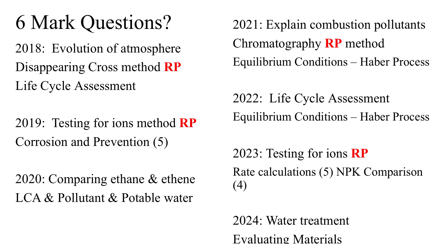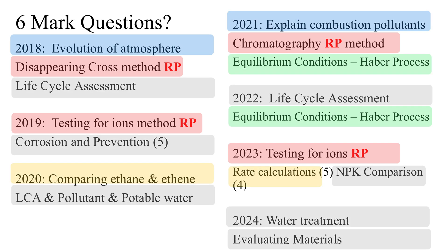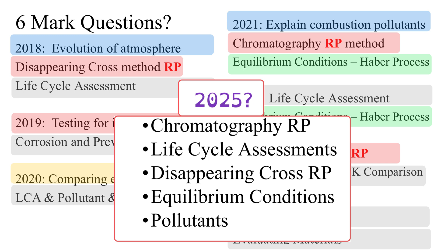There are usually two six-mark questions on chemistry paper two. Looking at what these have been from 2018 through to 2024, there's normally a required practical question and at least one more — such as life cycle assessments, corrosion and prevention, or water treatment. For 2025: chromatography as a required practical hasn't been a six-mark question for three years; life cycle assessments haven't been assessed for two years; the disappearing cross practical hasn't had a method-writing question since 2018; equilibrium conditions haven't featured for two years; and atmospheric pollutants — both their sources and the problems they cause — could also appear as a six-mark question.